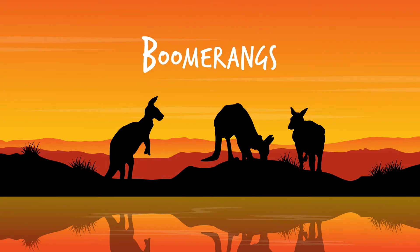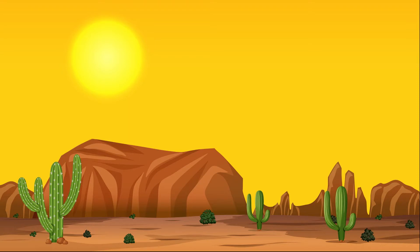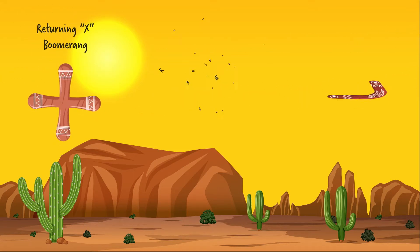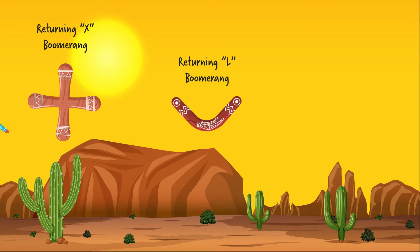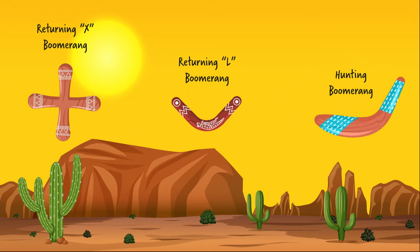Welcome boys and girls. Today we're going to talk about boomerangs. Boomerangs can come in many different shapes and sizes. The most commonly known boomerangs are the returning kind, which can come in X shape, L shape, or other shapes. And then we also have the lesser-known non-returning or hunting boomerang.